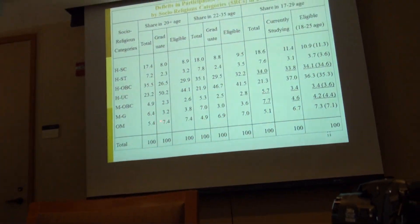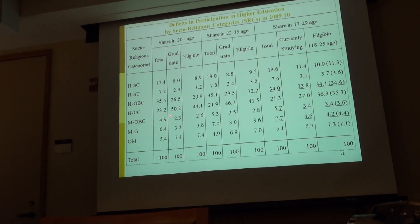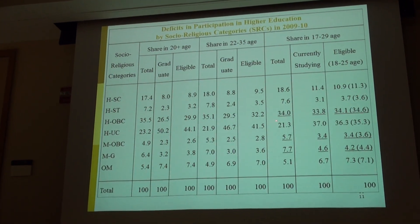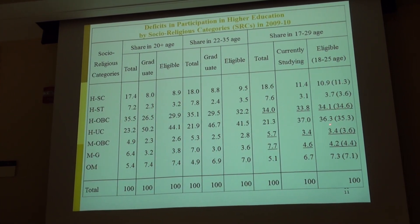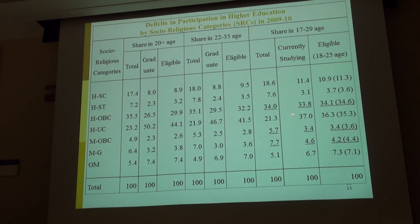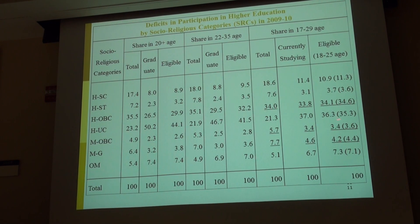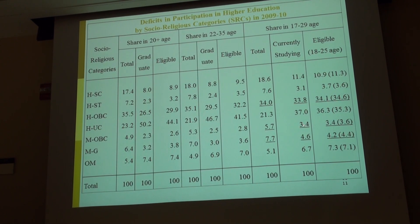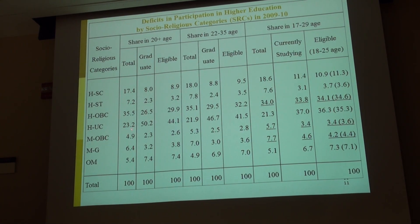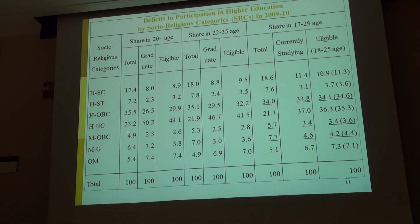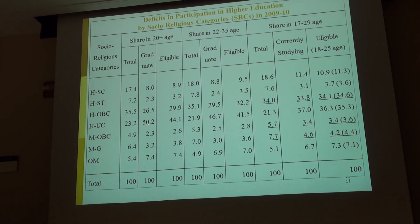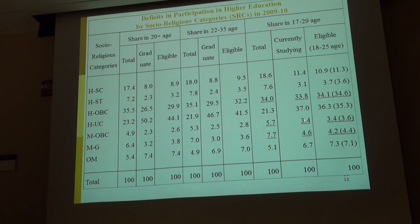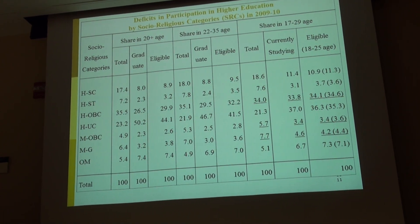For Muslim OBCs, it is 4.9% versus 23.2% in one measure, but when you look at the eligible population it becomes 36.3%. Muslims have a share in population of 5.7%, and currently studying is 3.4%. Hindu upper castes have 23.2% in the population but their share among graduates is 50.2%, more than double. But as soon as you look at the eligible population, the gaps between communities decline dramatically.